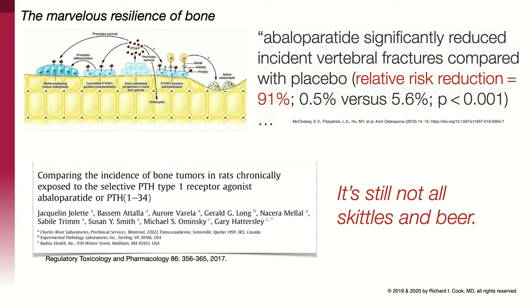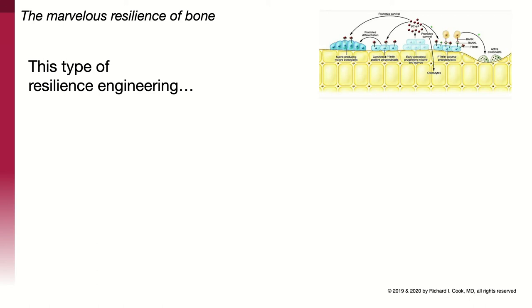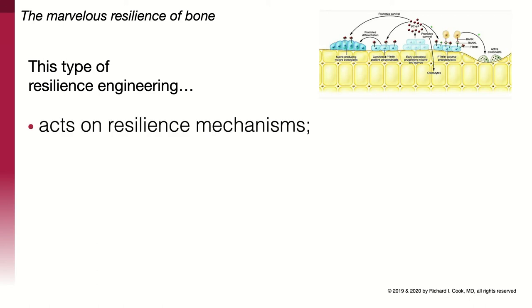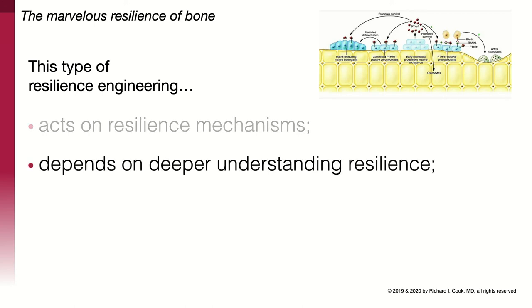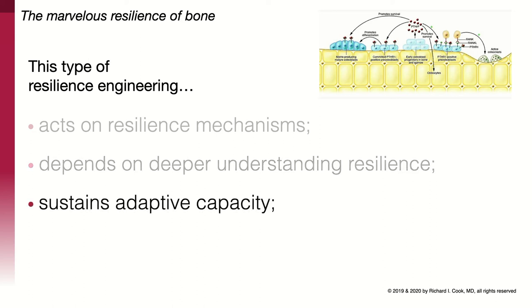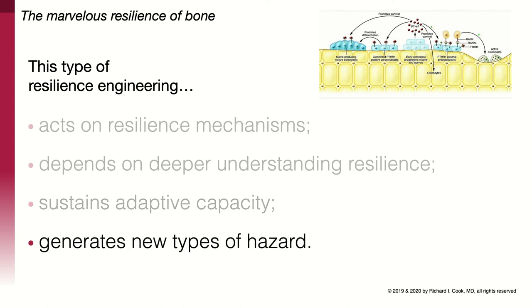It's not all good news — there are potential problems. Some animal studies show that large doses of PTHRP can produce tumors, so it may not be without side effects and there may be risks attached to it. But this is another type of resilience engineering, different from the first. This type acts on resilience mechanisms themselves — it goes inside the things that produce resilience and tries to make an adjustment. It depends on a much deeper understanding of resilience. It has the effect of sustaining adaptive capacity — it's not just about fixing broken things, but preventing things from happening in the future — though it probably generates new types of hazards not yet well understood.